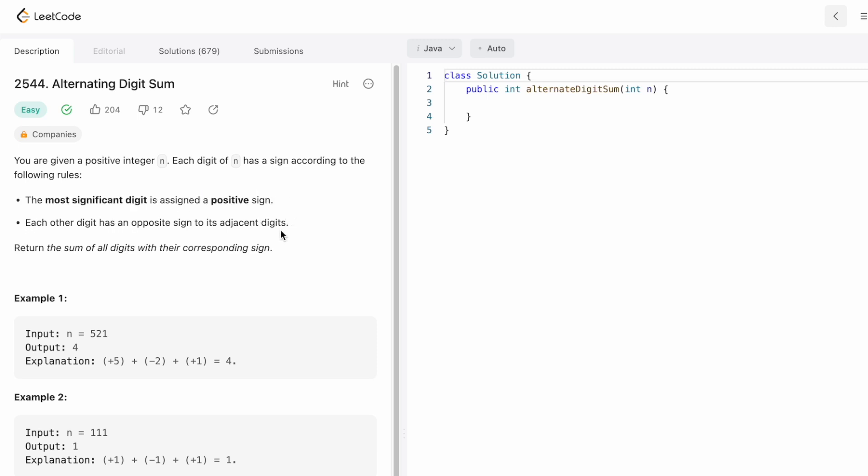We have to return the sum of all the digits with their corresponding signs. This is the function given to us: alternating digit sum. This is the input integer n given to us which we have to work on, and the return type is an integer, so we need to return an integer as the output.